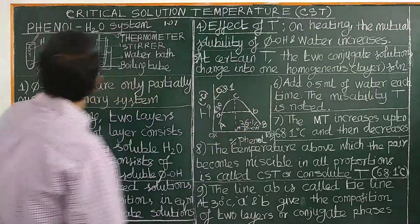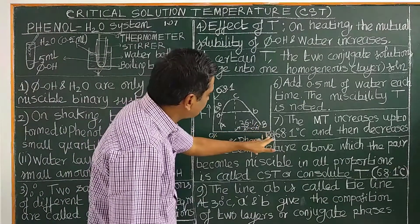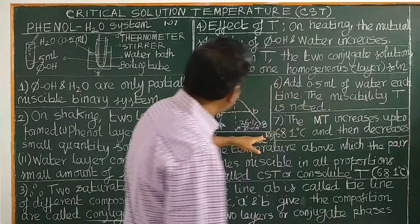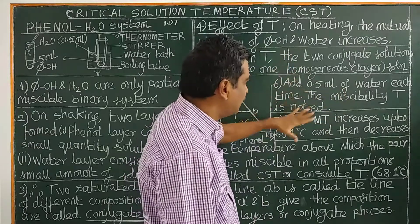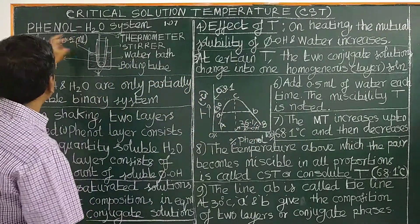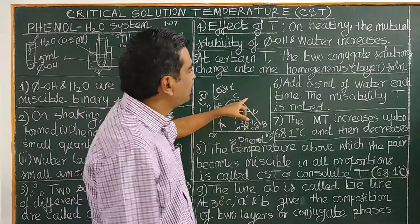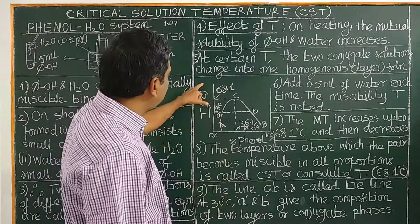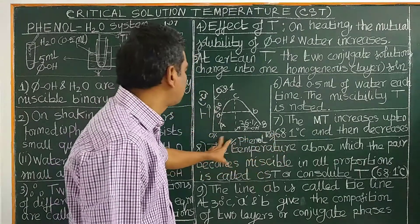In the experiment, we start with 100% phenol and add water in increments of 0.5 ml. Each time water is added, the composition of phenol decreases and the miscibility temperature is noted. As more water is added, the miscibility temperature first increases, and this data is plotted as a graph showing the variation of temperature with respect to the composition of phenol.